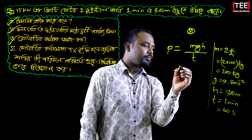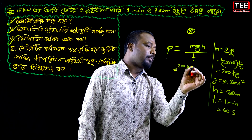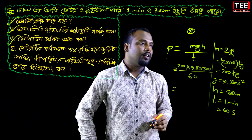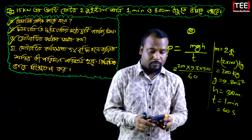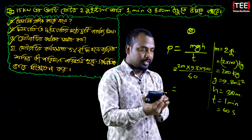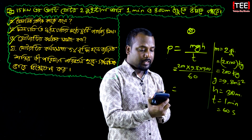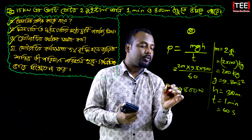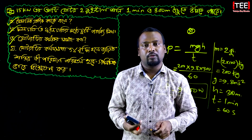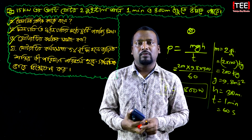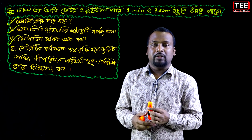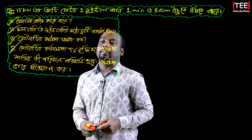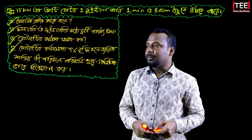So we will calculate: 200 kg into G 9.8 and H is 300 meters, divide by 60. So we will say 365 meters divided by 60. Then we will measure and check — the efficiency is worth about 65 percent.